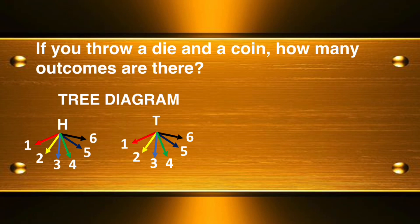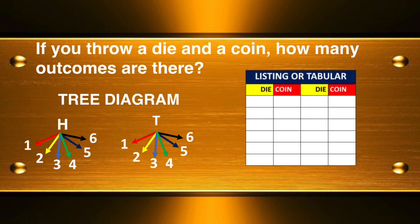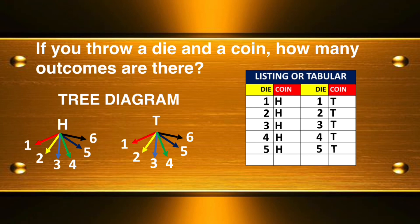You can also use listing or tabular method. You can get: one-head, one-tail, two-head, two-tail, three-head, three-tail, four-head, four-tail, five-head, five-tail, six-head, or six-tail. If you count all the possibilities, we get twelve outcomes.